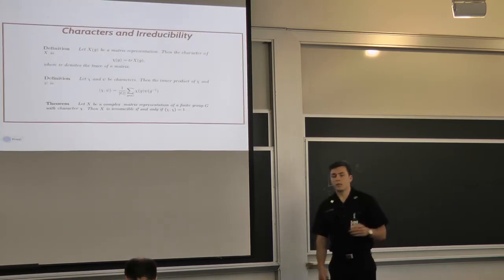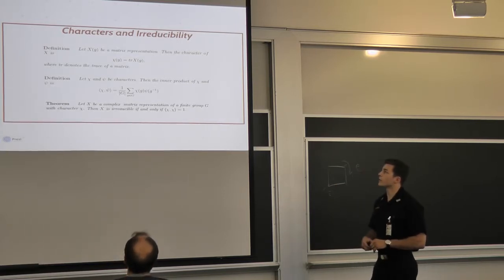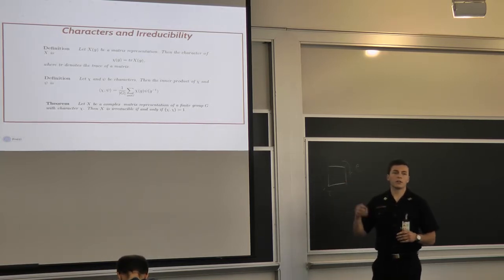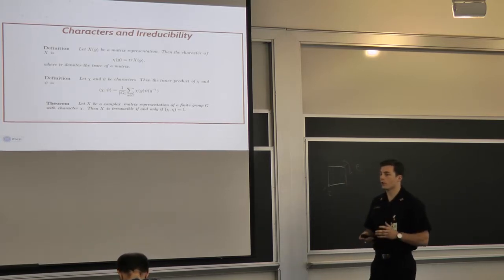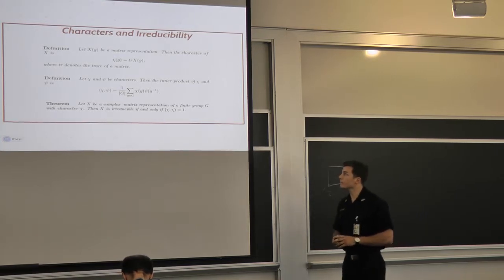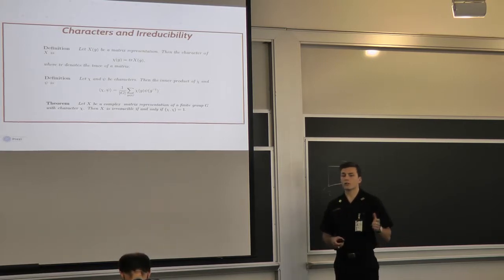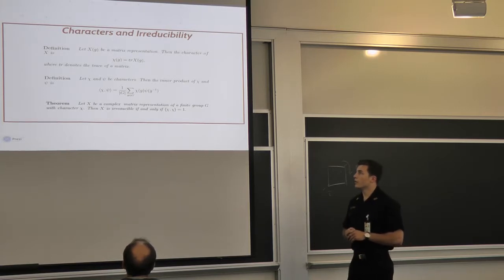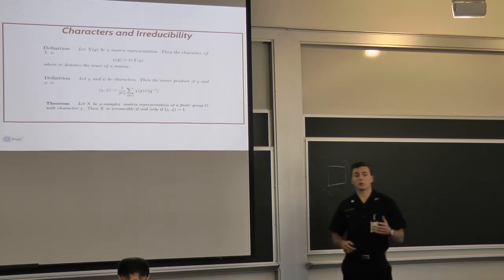So the other part of having a matrix representation is that you have to start to consider characters and irreducibility of those characters. A character is simply the trace of the matrix representation. So the matrix representation for rho was 0, 1, negative 1, 0. So the character of that is 0. Same thing can be said for the reflection. And the way you start to think about irreducibility with this is you start to consider inner products on characters. The associated theorem with that definition of inner product is that if you were to take a character of a matrix representation and take the inner product with itself, you'll get 1.